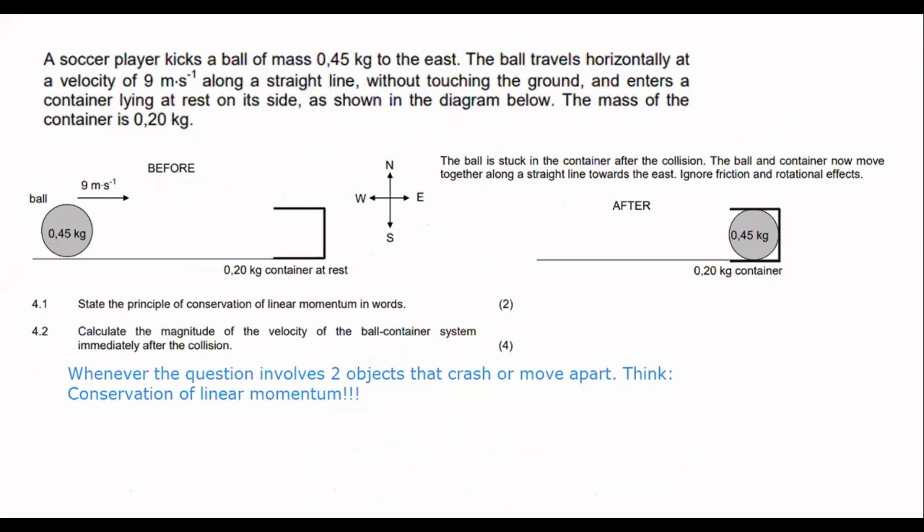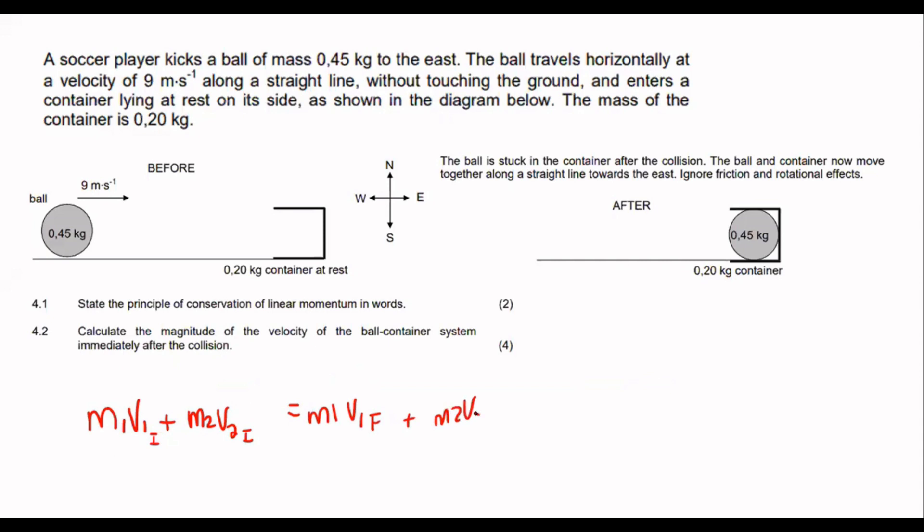Now, some of you might be like, I don't even remember that. We did that so long ago. Yes, so you guys would have done this in term one. The conservation of linear momentum formula is the one that goes like this. It's the one that does this. M1V1 plus M2V2, these are the initial velocities, equals to M1V1 plus M2V2. That is the conservation of linear momentum. How can you remember that? Well, mass times velocity is momentum.